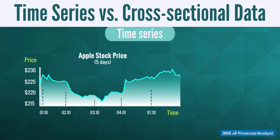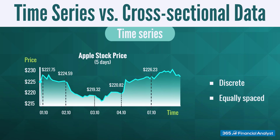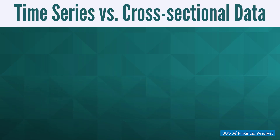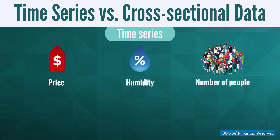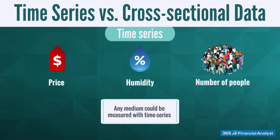Time series is a sequence of information collected at discrete and equally spaced intervals of time. For example, a historical series of monthly stock returns. The value of a time series can be pretty much anything measurable that depends on time in some way, like prices, humidity, or number of people. As long as the values we record are unambiguous, any medium could be measured with time series.